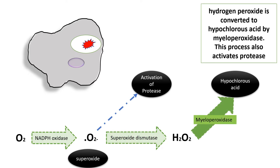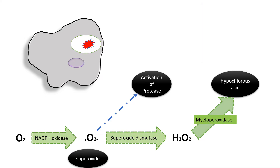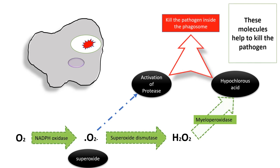Hydrogen peroxide is converted to hypochlorous acid by the enzyme myeloperoxidase. This process — oxidative burst — also helps to activate protease. These active molecules help to kill the pathogen inside the phagosome.